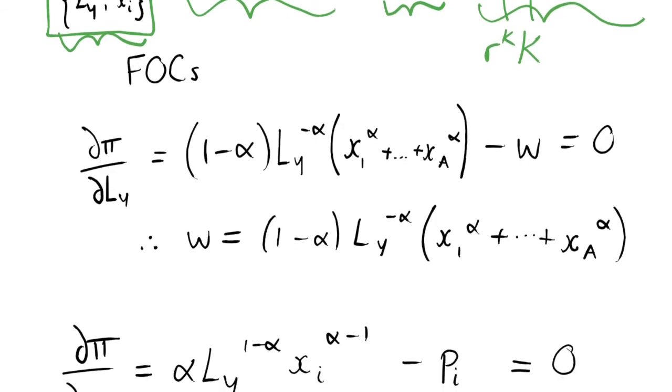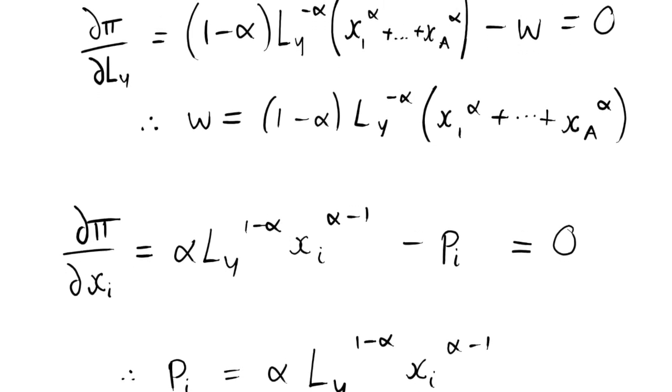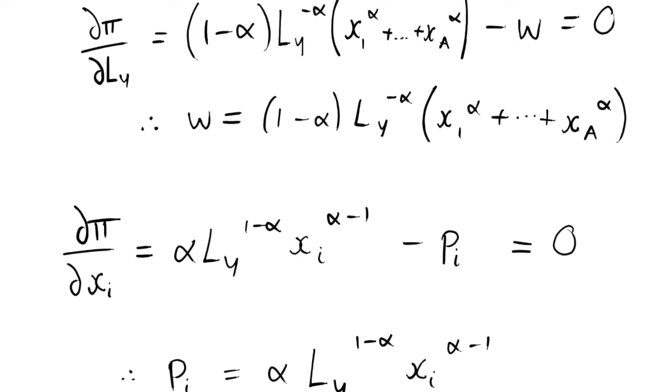So we would have lots of first order conditions, and what we're going to do is just do the first order condition for a general X_i, and it would just be the same for each different intermediate good. We just replace the i with a 1, 2, 3, or so on.